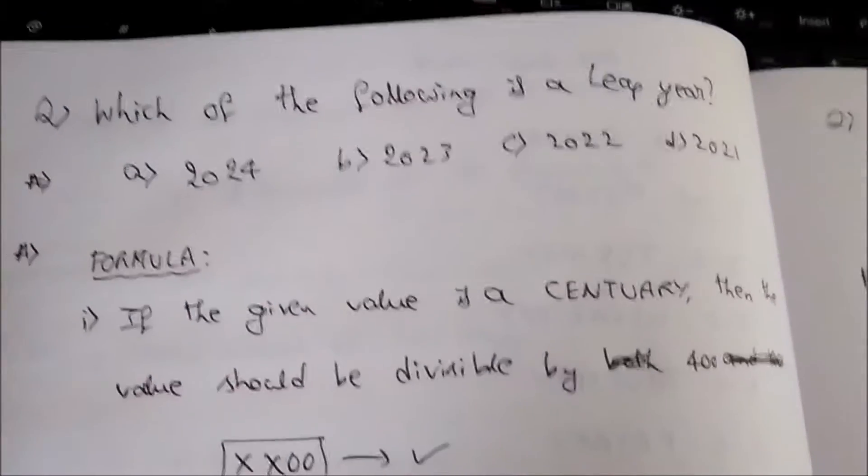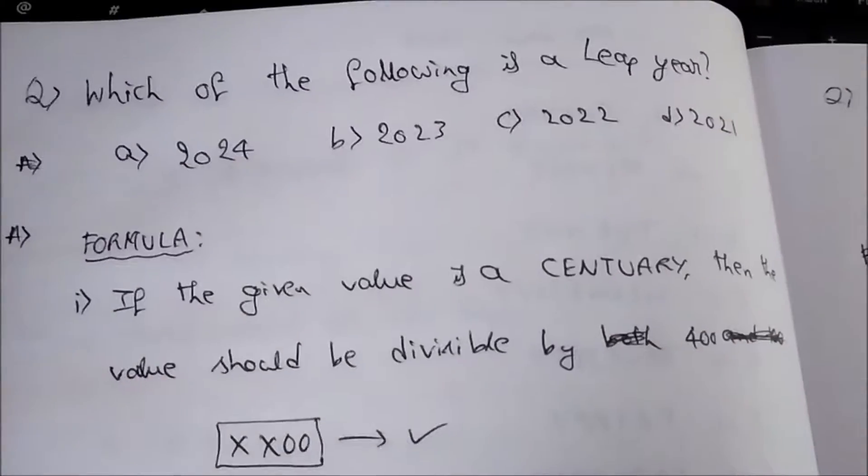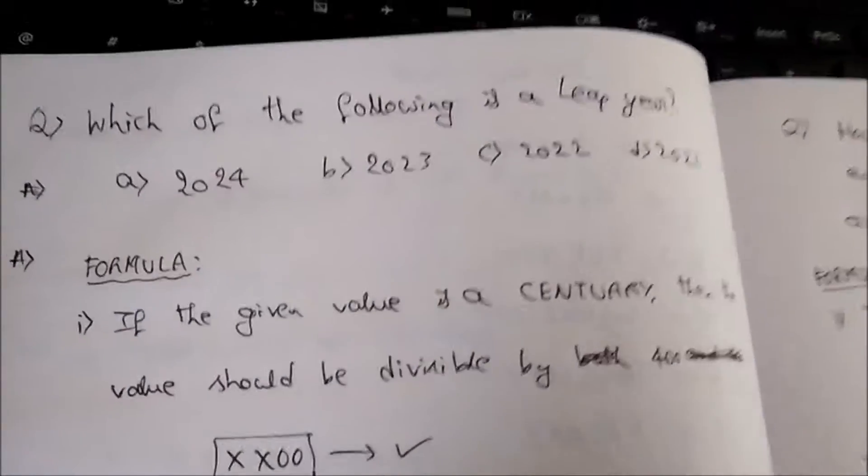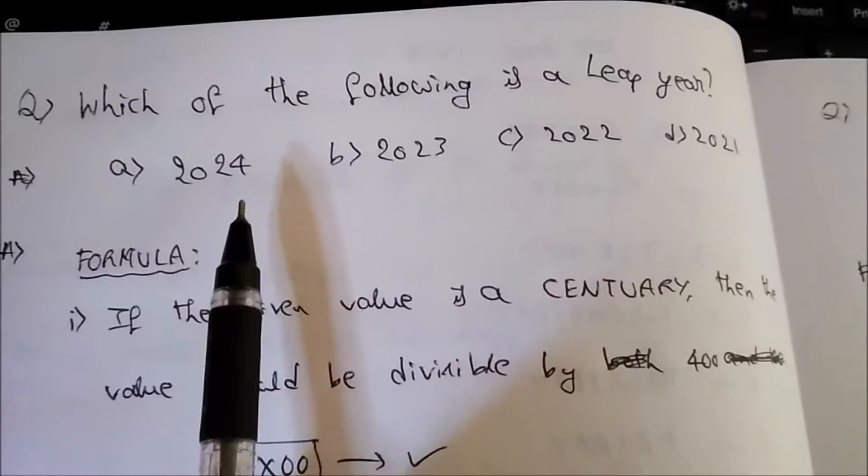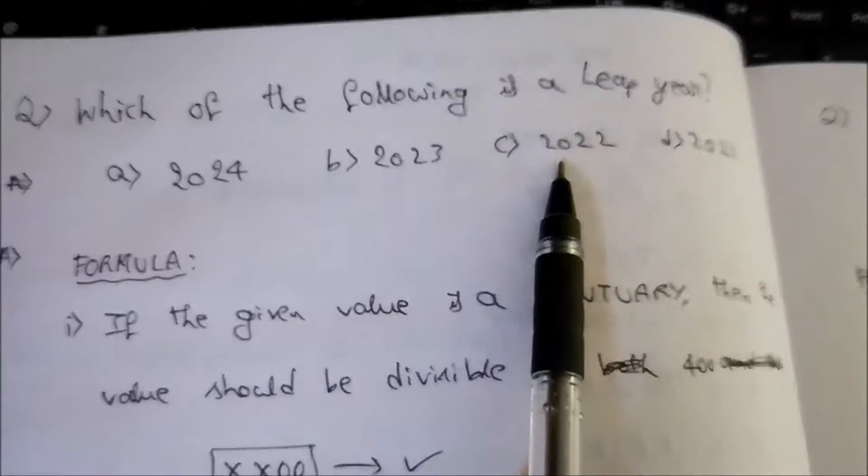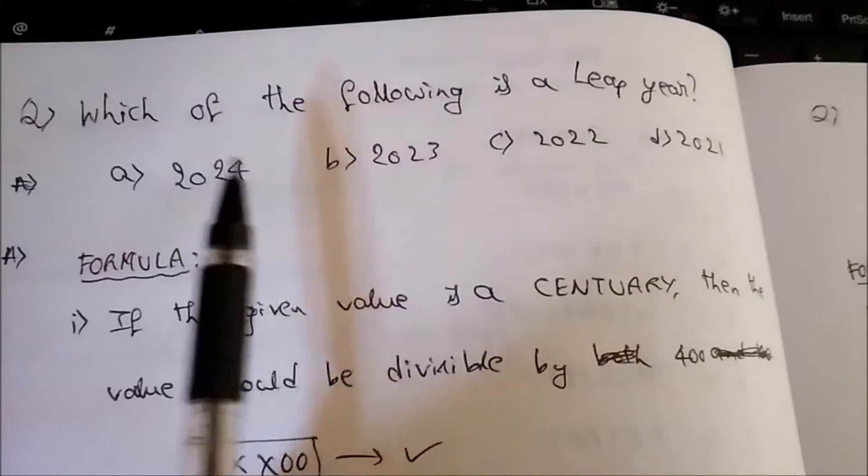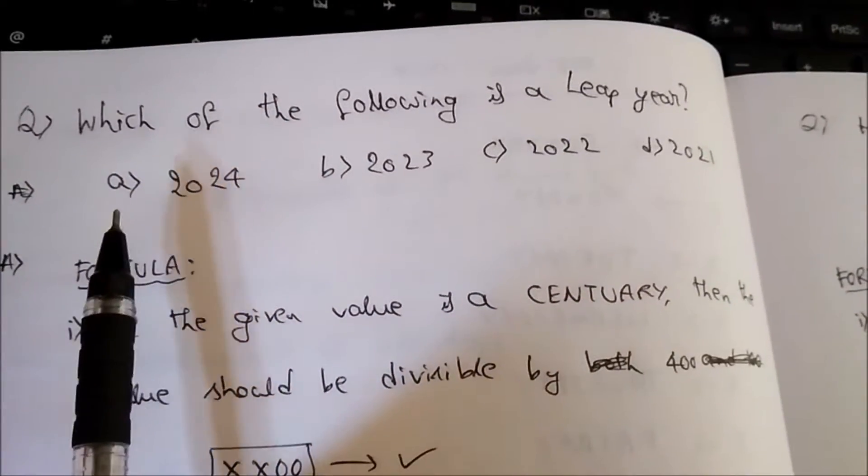Hi friends, today I have taken a problem from the topic calendars. Let me read the question: which of the following is a leap year? 2024, 2023, 2022, 2021. The question is very simple, we need to find which of the given values is a leap year.